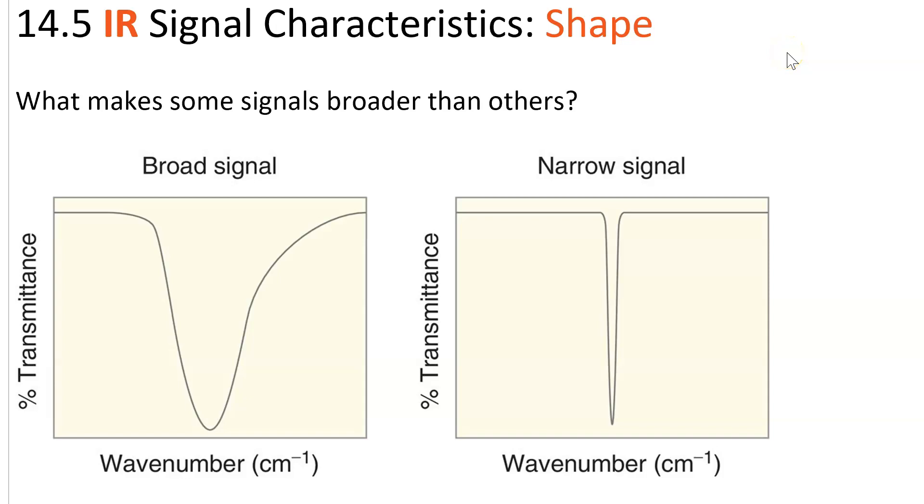Finally, with IR, we look at the shape of the signals. Why are some signals broad, like this one here, and some signals narrow and sharp?